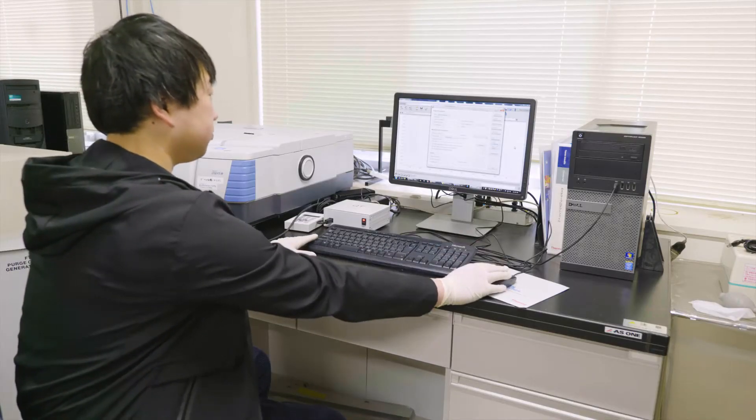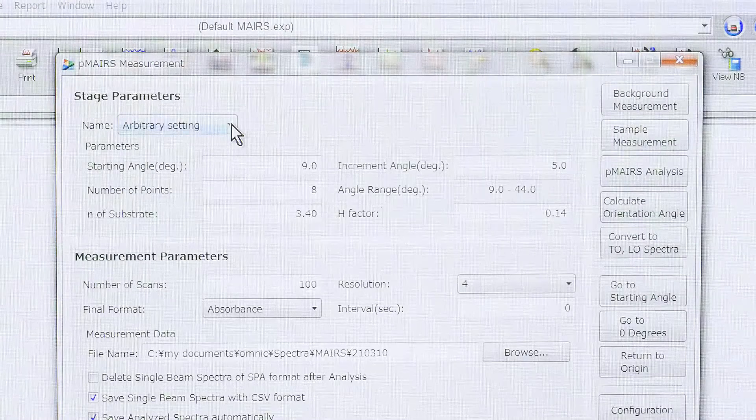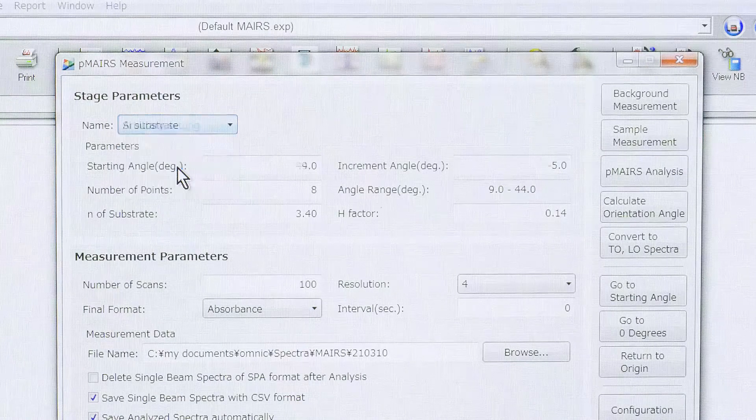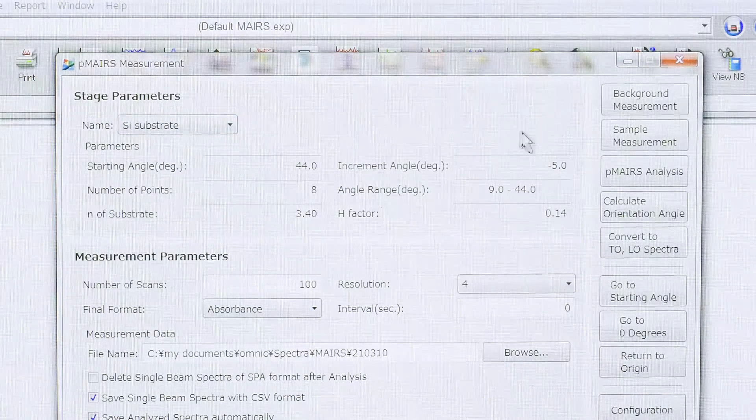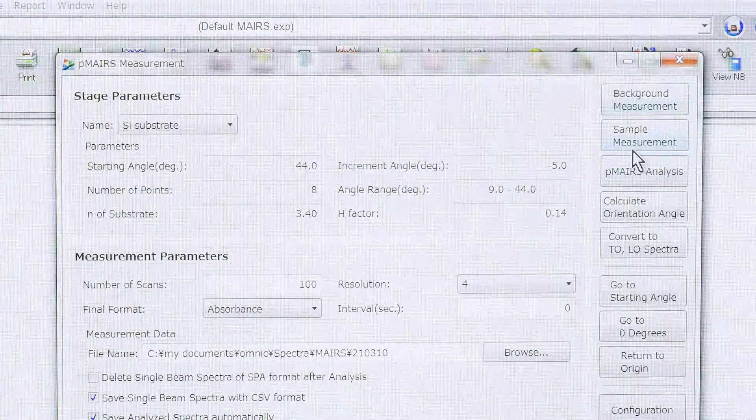Then the holder is put back in this sample box and the air purge cover is put on the top. On this computer screen, the substrate tab of silicon is selected and then the optimal angles of incidence for silicon are automatically set.